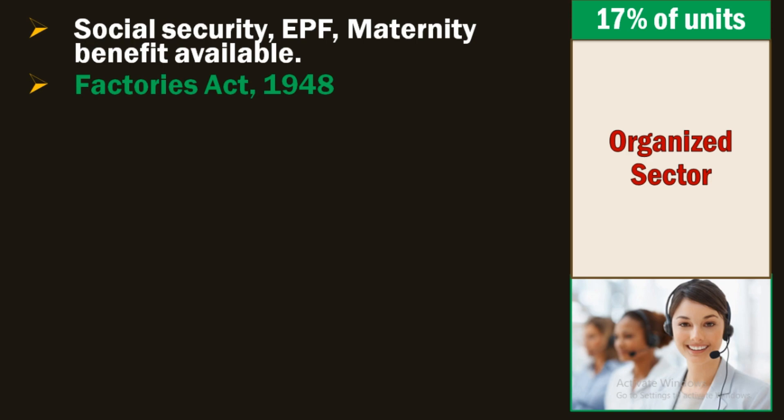Let me explain what the Factory Act 1948 was — this can help you in answer writing. The first point of Factory Act 1948 says: if you have taken a room, and inside that room you are using electricity, and you have hired more than 10 workers for your work in that room, then that means you come under the organized sector.